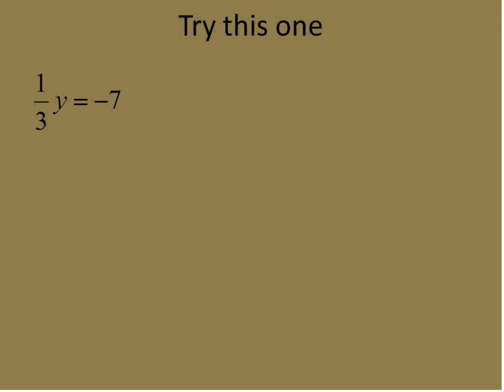Let's try this one. This is 1/3 y is equal to negative 7. When we have an equation like this, we're saying 1/3 times y. The opposite of 1/3 times y is to divide both sides by 1/3. But you can't really write 1/3 divided by 1/3, so instead, I'm going to multiply times the reciprocal of 1/3, which is 3.